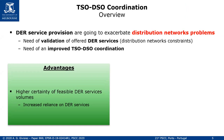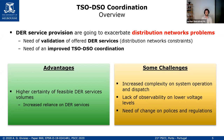For example, higher certainty of feasible DR services volumes means the TSO can increase its reliance on DR services. Depending on the system, this means we can lower costs or increase the participation of renewables in the markets. There are some challenges, however — for example, increased complexity in system operation and dispatch, lack of observability at lower voltage levels, and the need to change policies and regulations because they were made for a time when we didn't have these distributed generators.